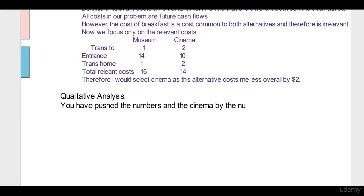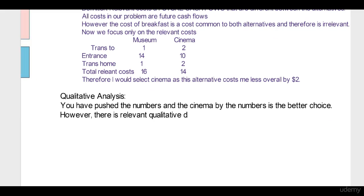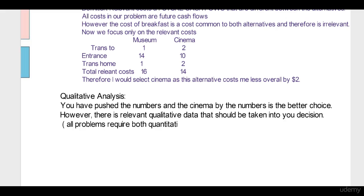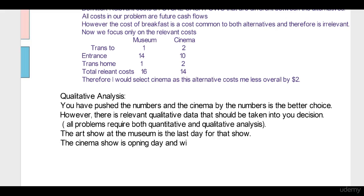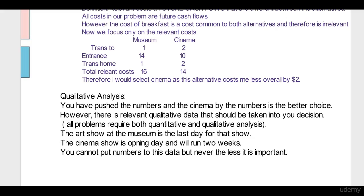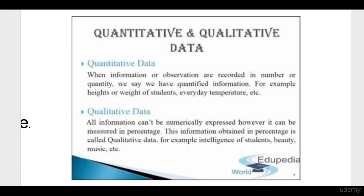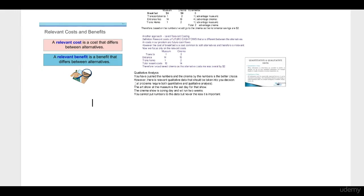That's only one step in the analysis. A very important step is to address the qualitative analysis — data to which you cannot put numbers. For example, the art show is the last day, but the movie runs for the next two weeks. That factor should come into your decision. Your last step is to make a decision.